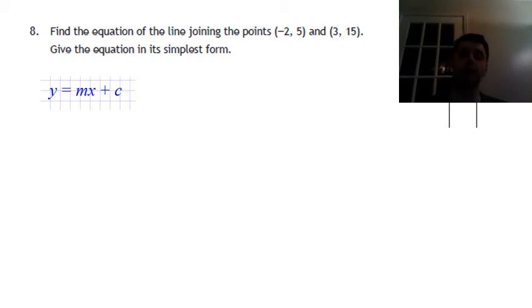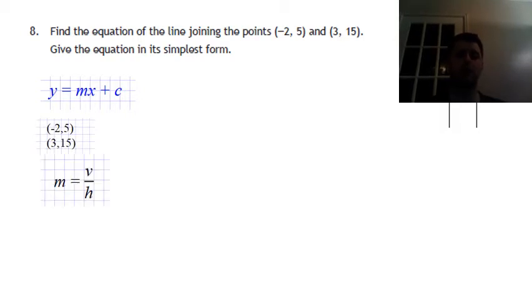So the m, I remember, is always the two points. It's the vertical difference divided by the horizontal difference. The vertical difference, remember, is the y one. So it goes from 5 to 15, so the difference is 10. Negative 2 to 3, the difference is 5.